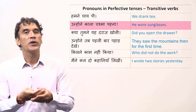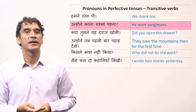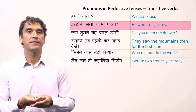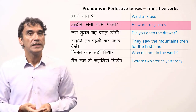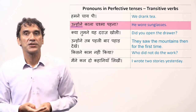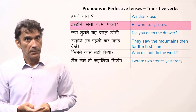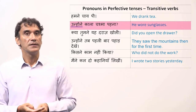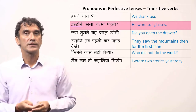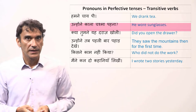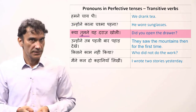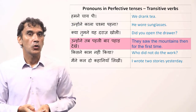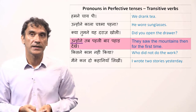'Unhone kaala chashma pehna' — he wore sunglasses. Here the honorific is used; the literal translation is 'they wore sunglasses', but because of the honorific the subject is singular — he wore sunglasses. 'Kya tumne yeh daraaz kholi?' — did you open the drawer? 'Unhone tab pehli baar pahaar dekhe' — they saw the mountains for the first time.